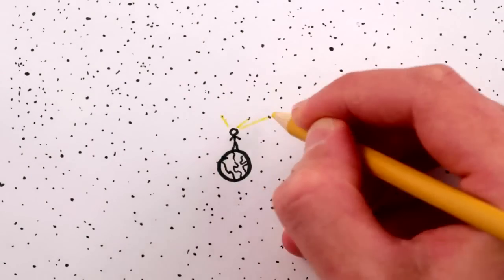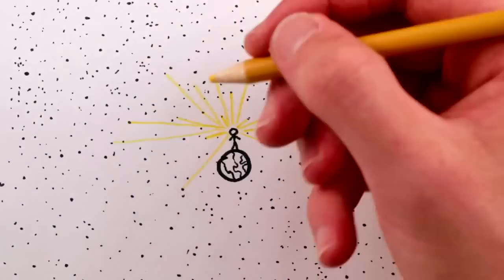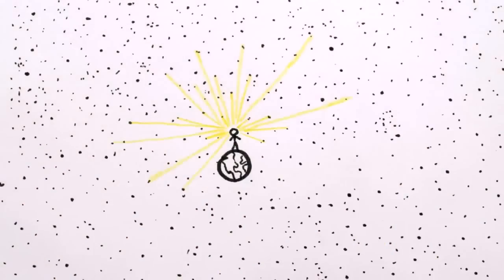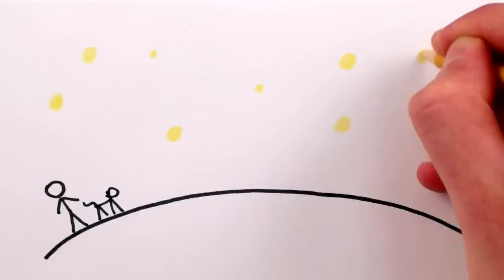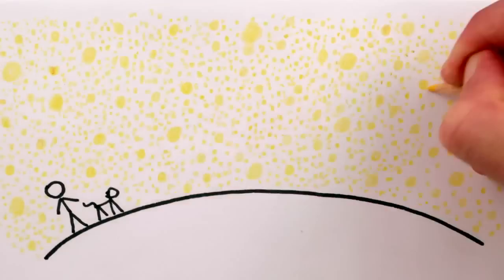And in an infinite, eternal universe, no matter what direction you picked, if you looked far enough in that direction, you would see a star or galaxy. So the whole sky should be as bright as the sun, night and day.